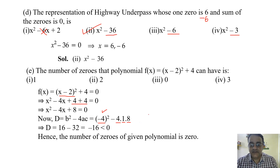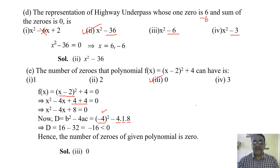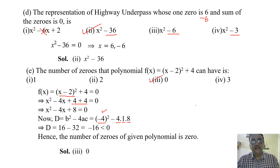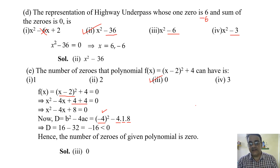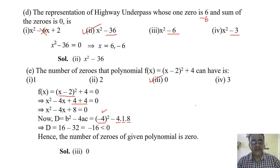The answer is option three. Some may think: since the degree is two it should have two zeros — but those zeros are imaginary, not real, because D is less than zero. So when we talk about zeros in class 10, we mean real zeros only.